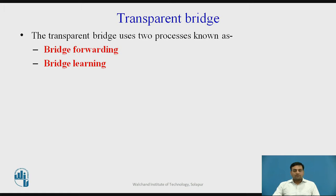The second process is bridge learning. In this process, whenever a frame arrives at the bridge, the bridge takes its source address and the incoming port number and copies them into its database. This information can be used later to find the particular address of a host and its direction.